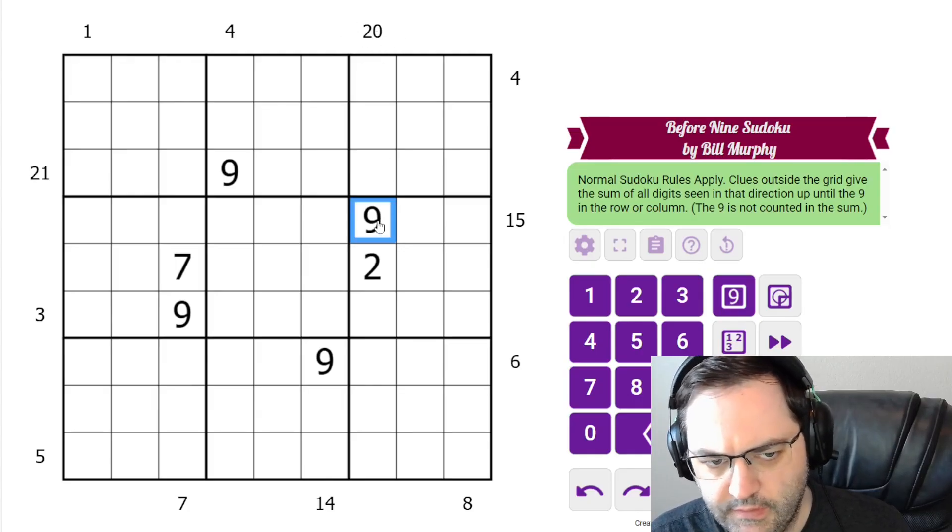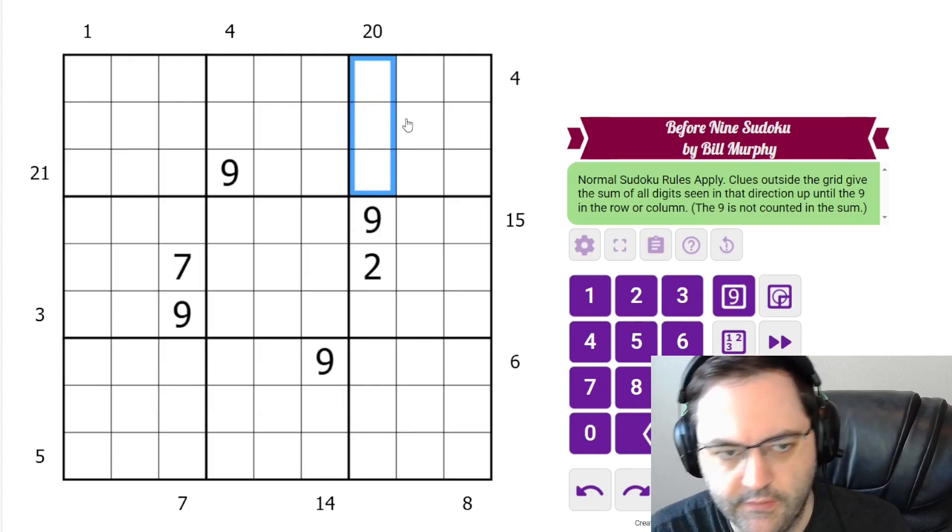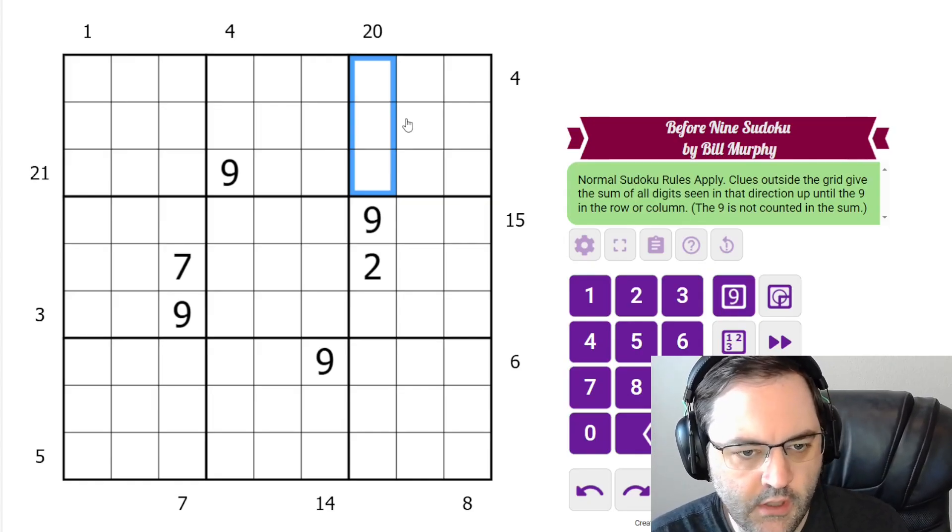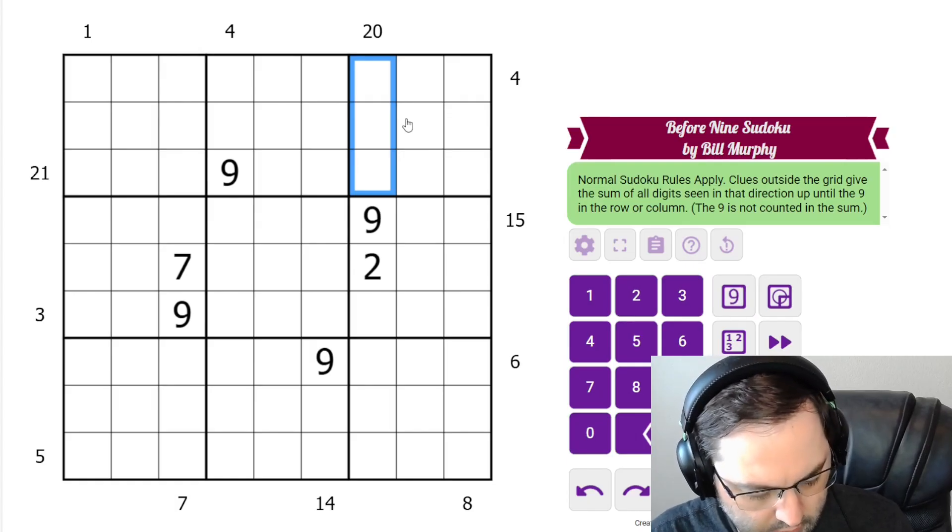So this 20 for example, since the 9 is here, the 20 is the sum of these three cells. Those are the rules, and let's start with that 20 actually.